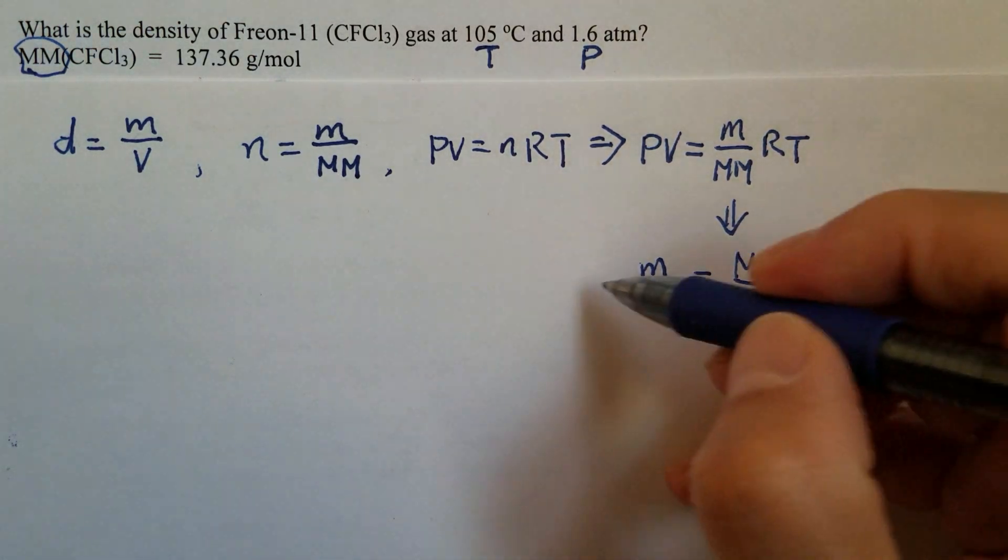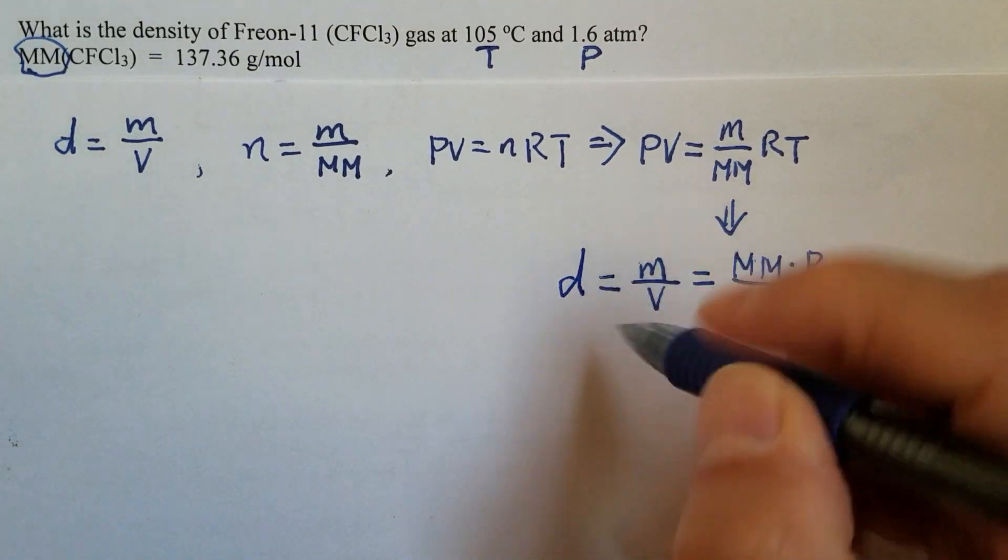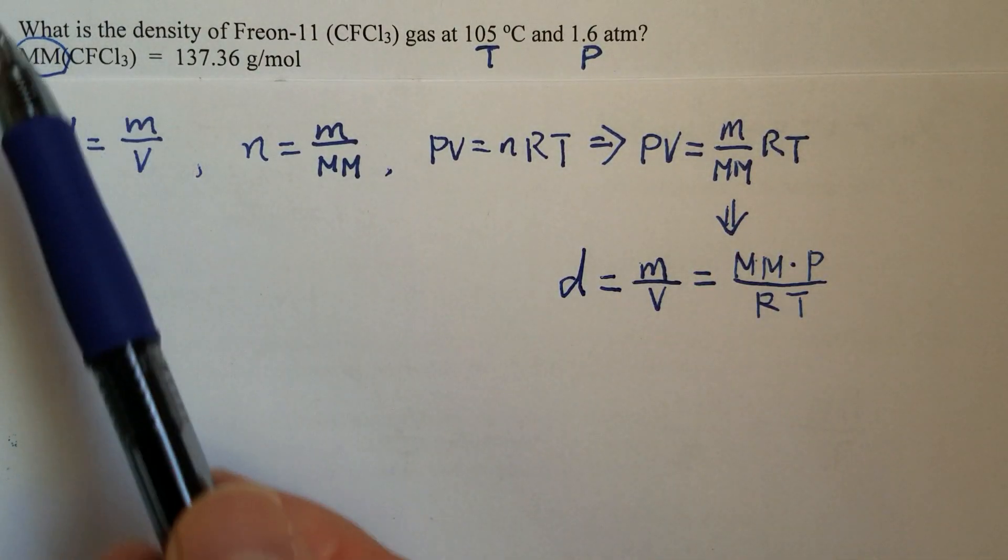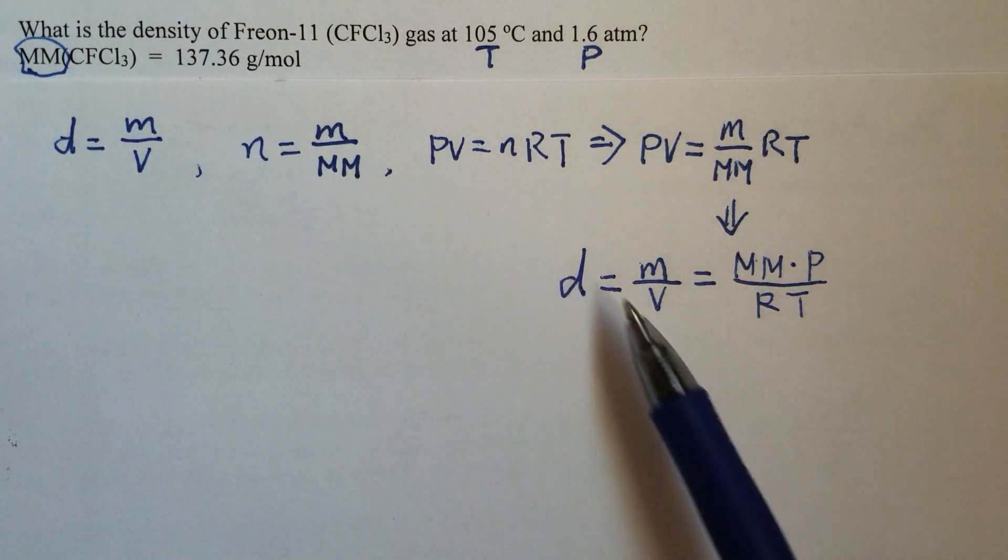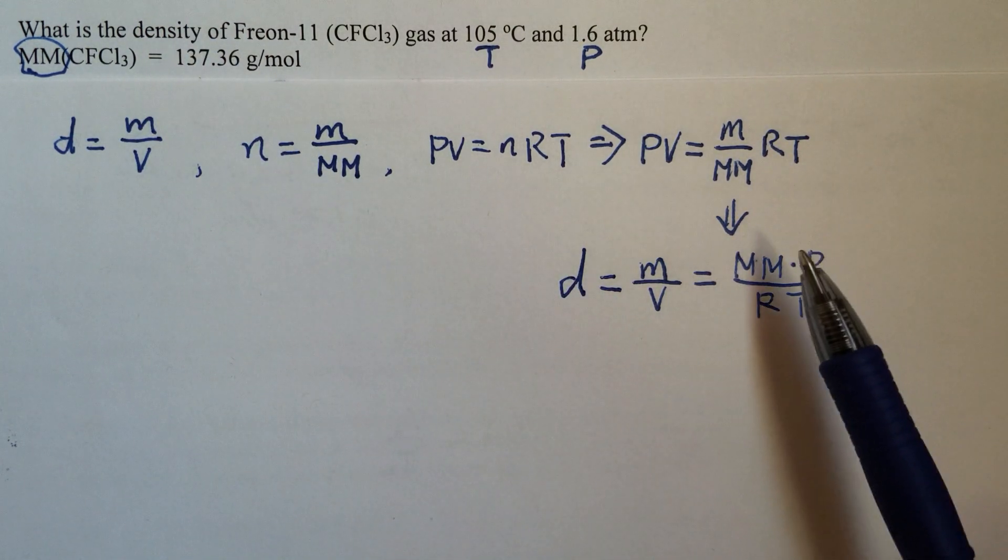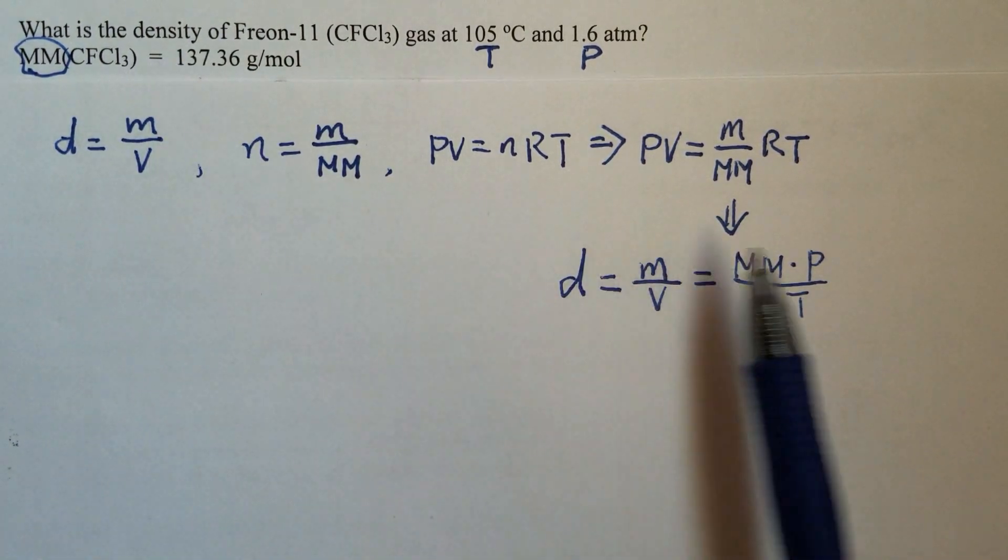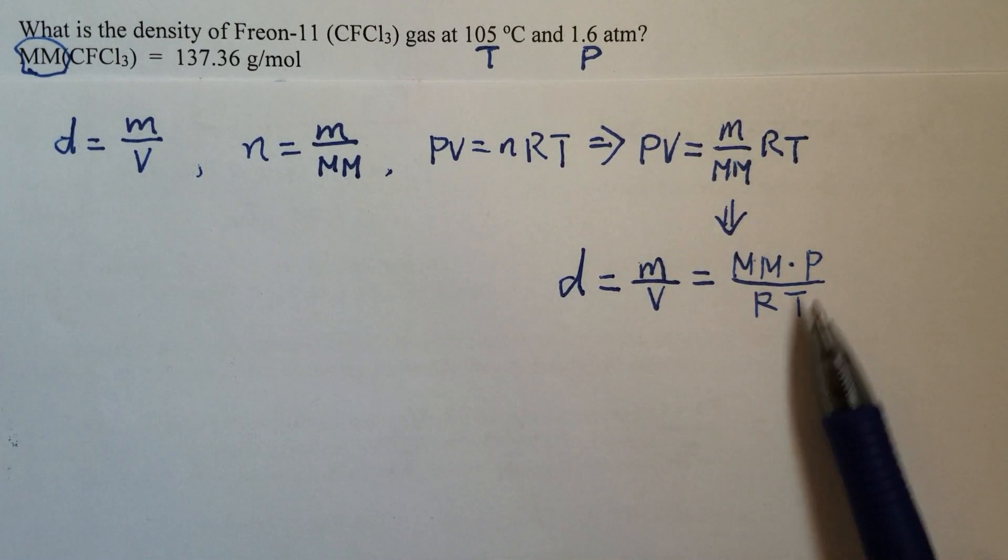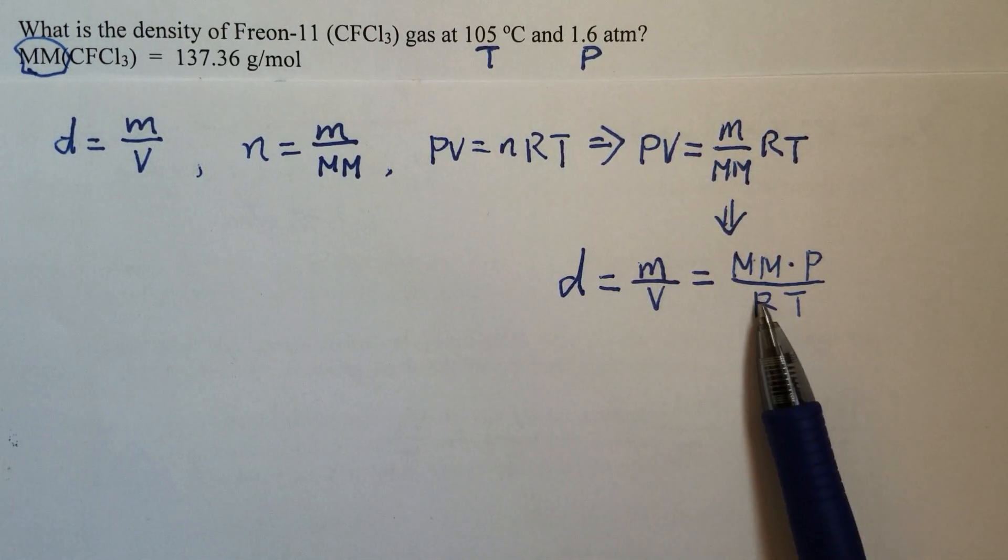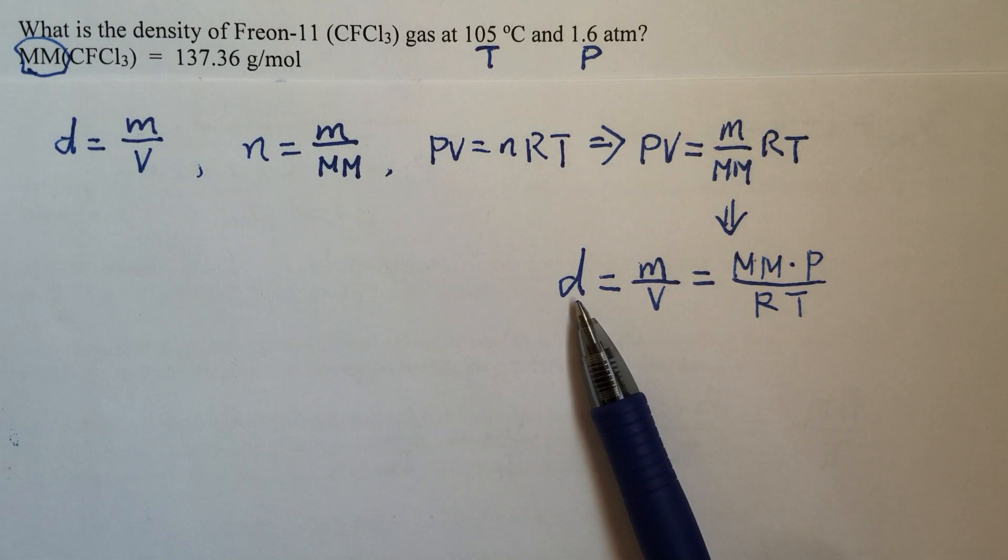Then what is m over V? That's d, that's the density. So we do know molar mass, we know pressure, we know temperature. R is a constant, so then we are ready to calculate density.